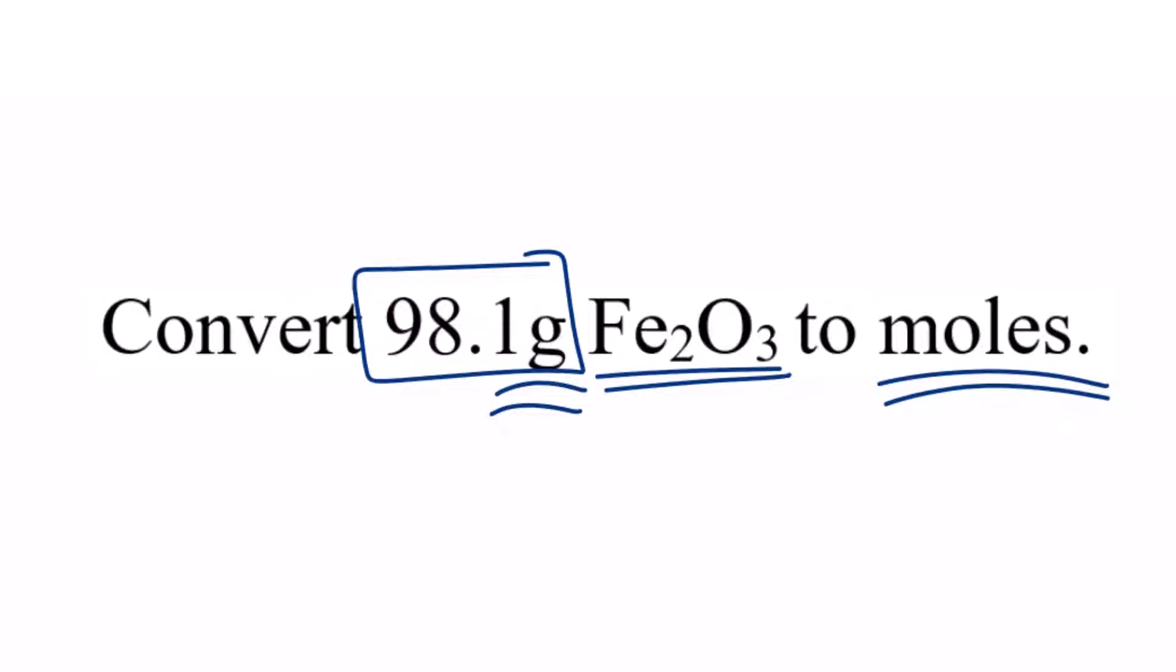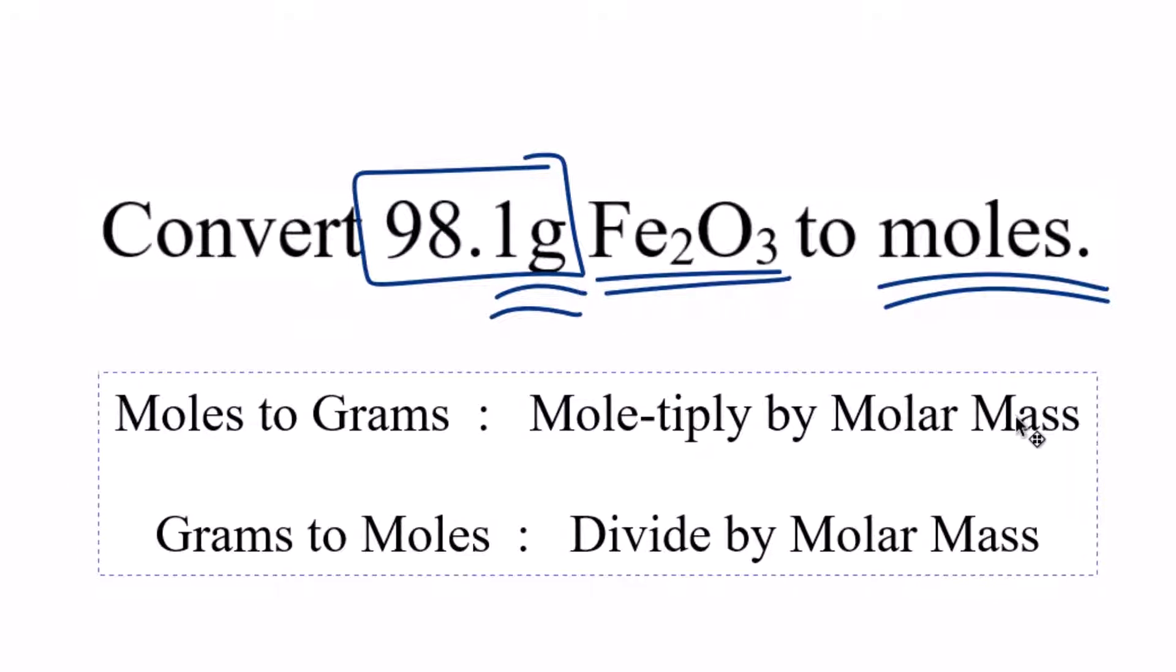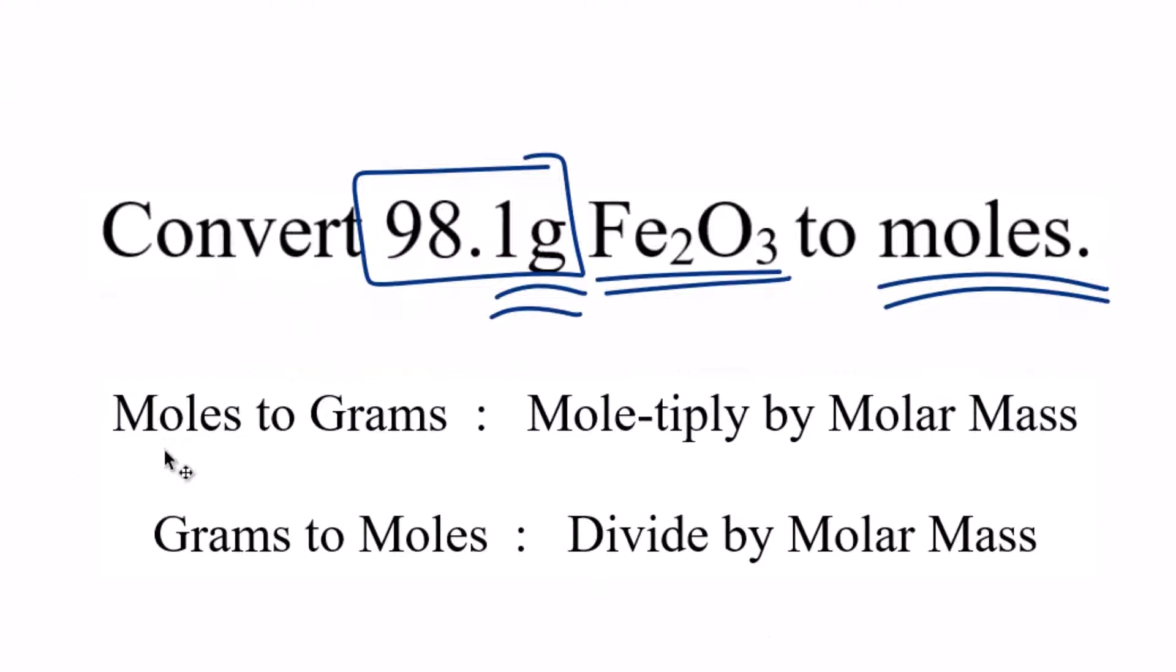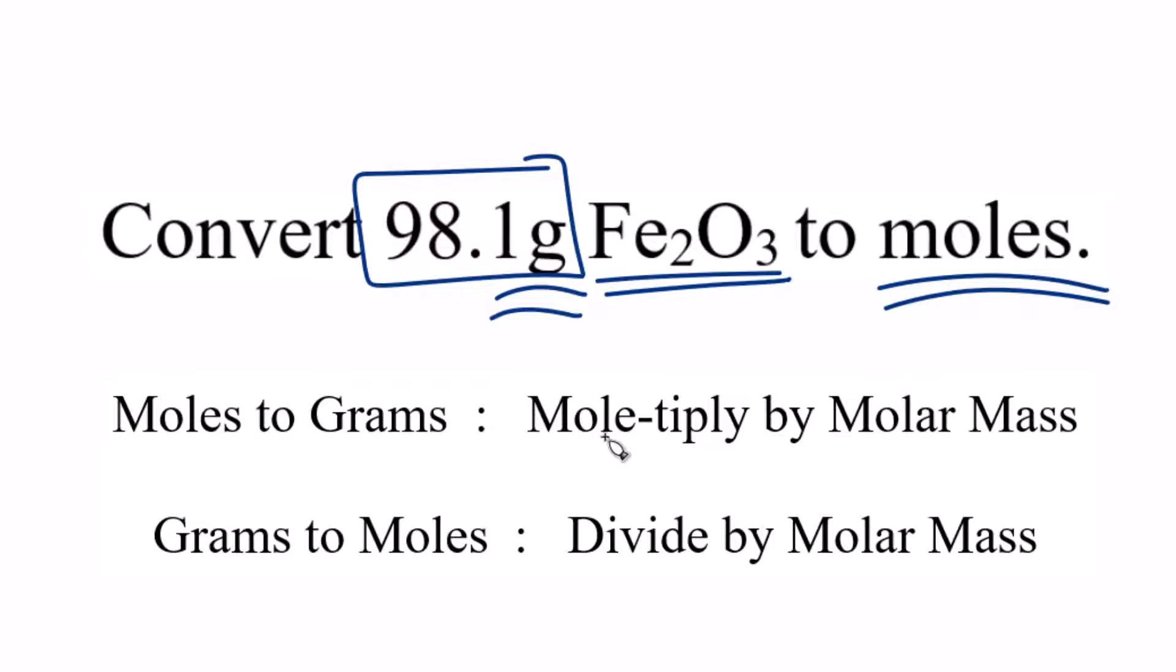So it's helpful to think of mole to grams and grams to mole conversions like this. When we're going from moles to grams, we multiply by the molar mass. It's a little mnemonic to help you remember. When we have grams to moles, we're just going to do the opposite. Grams to moles, we'll divide by the molar mass for Fe2O3.